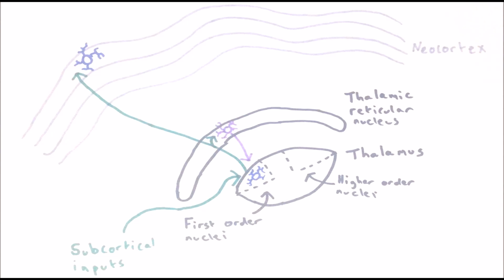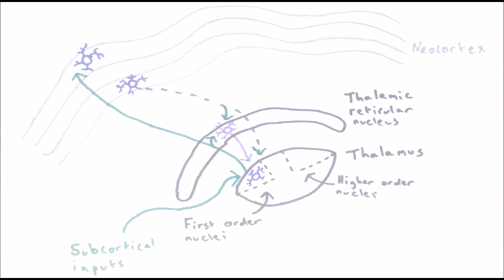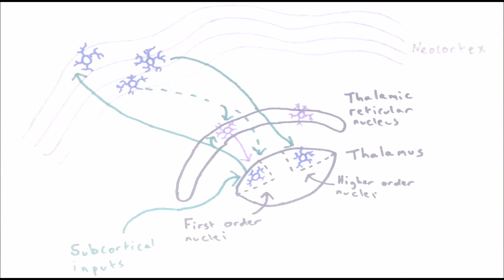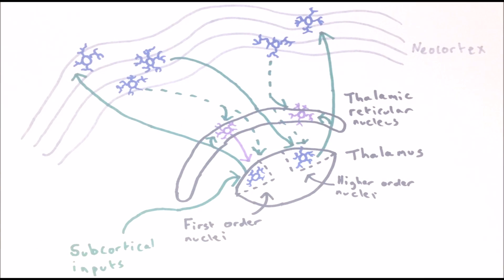Neurons in the thalamic reticular nucleus in turn send inhibitory connections back to thalamic relay cells. Neurons from layer 6 of the cortex then provide excitatory feedback both to the thalamic relay neurons and also to neurons in the thalamic reticular nucleus. Neurons from layer 5 of the cortex are the drivers of higher order thalamic nuclei, which then repeat this same pattern — sending excitatory connections to layer 4 of the cortex and thalamic reticular nucleus, whilst also receiving excitatory feedback from the cortex and inhibitory feedback from the thalamic reticular nucleus.